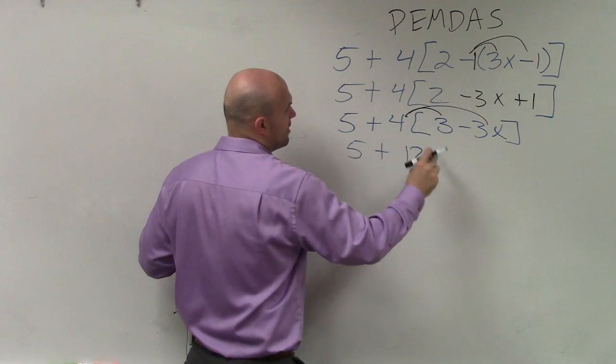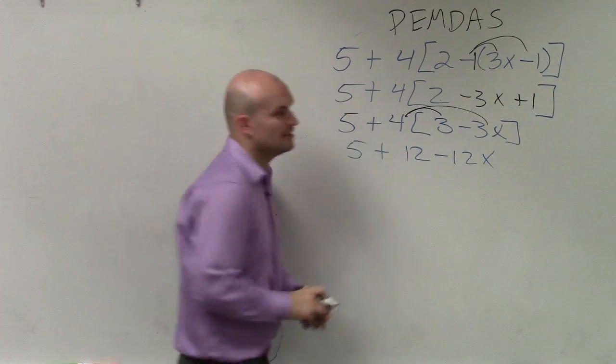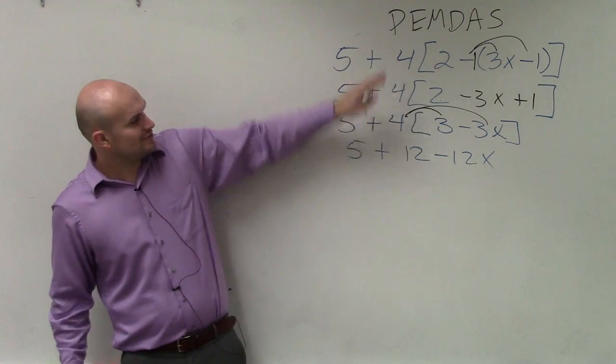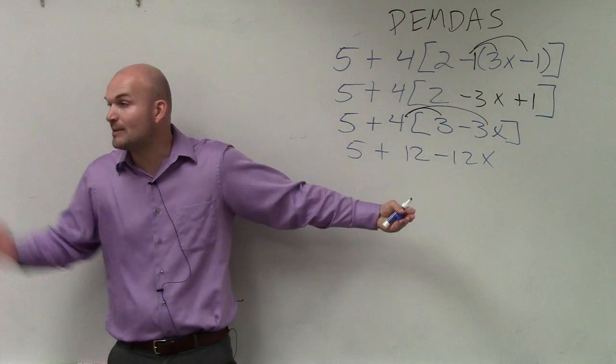4 times 3 is 12. 4 times negative 3x is negative 12x. Now, can I do addition and subtraction from left to right or anything I can combine? Yes.